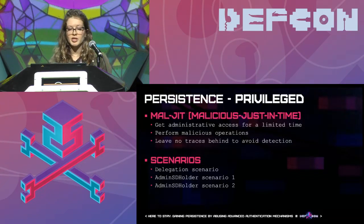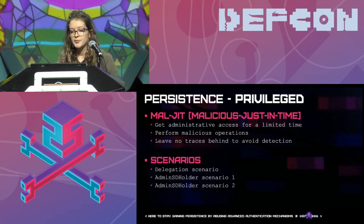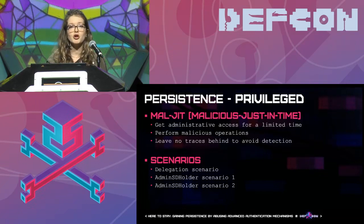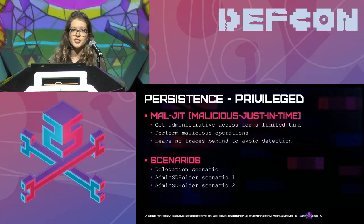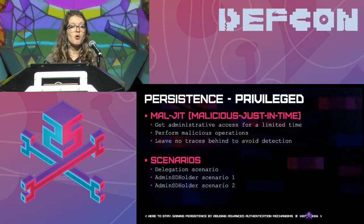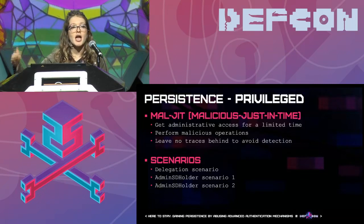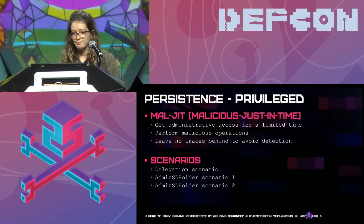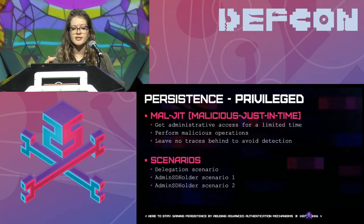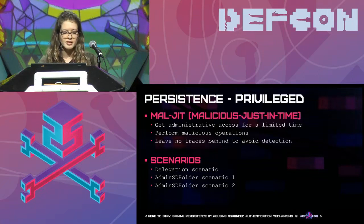While JIT administration was introduced to protect environments from attackers, a very similar concept can be abused by attackers to evade most detection mechanisms in place today. This brings us to malicious just-in-time administration: attackers may have limited access in the environment, but at any stage they can perform a few short steps to regain high privileges, perform malicious operations, and immediately erase their footprints — deleting all traces that they ever had those privileges — in order to avoid detection. We'll show three scenarios to illustrate this concept: the delegation scenario, and two concepts involving the AdminSDHolder object.